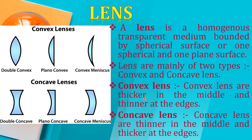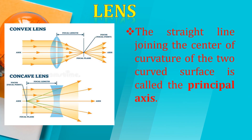A lens is a homogeneous transparent medium bounded by two spherical surfaces, or one spherical and one plain surface. It is our transparent medium which is surrounded by either spherical surfaces or a plain surface. For example, this is our double convex lens and this is our plain convex lens — one part is the spherical surface and one part is the plain surface. These types are plain convex lens, and when we use both sides as spherical surfaces, we use a double convex lens.